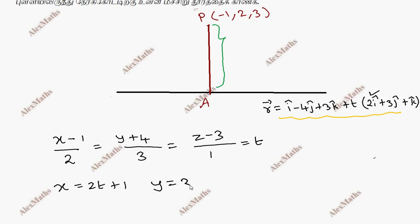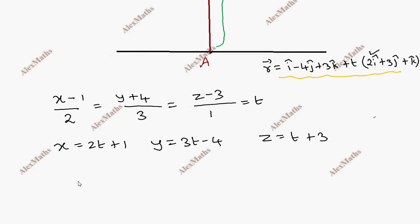From the parametric form of the line: x is equal to 2t plus 1, y is equal to 3t minus 4, z is equal to t plus 3. So the general point A on the line is equal to (2t plus 1, 3t minus 4, t plus 3).